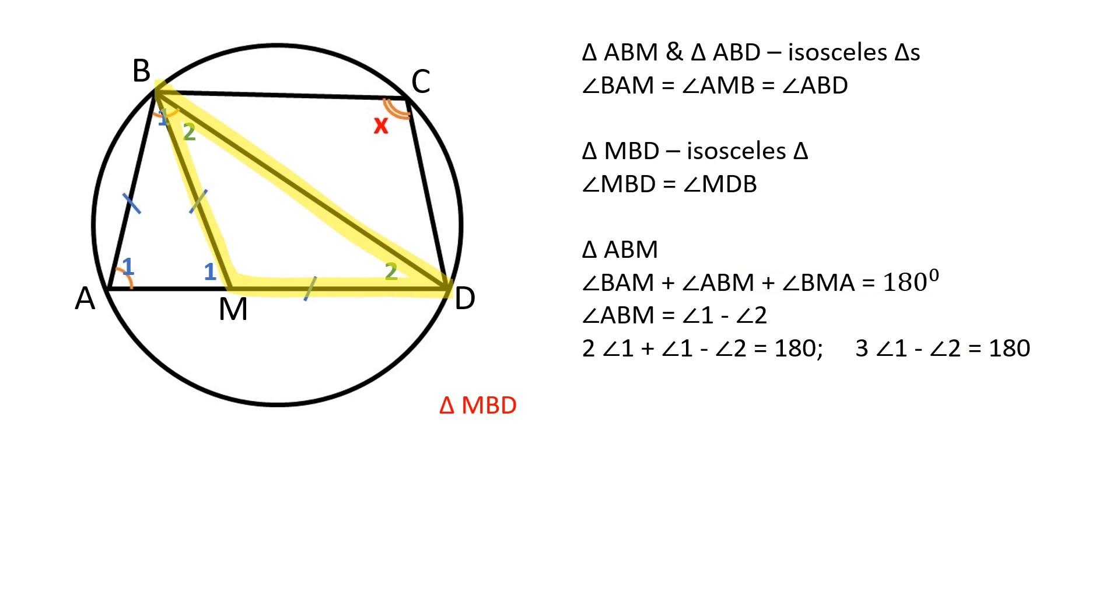In the triangle MBD, the sum of the interior angles is equal to 180 degrees. Angle BMD is equal to 180 minus angle 1. Therefore, we can write this equation as 2 times angle 2 plus 180 minus angle 1 is equal to 180. Let's calculate angle 2 using this equation.